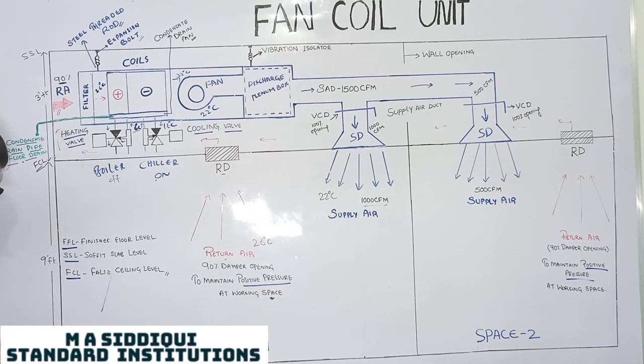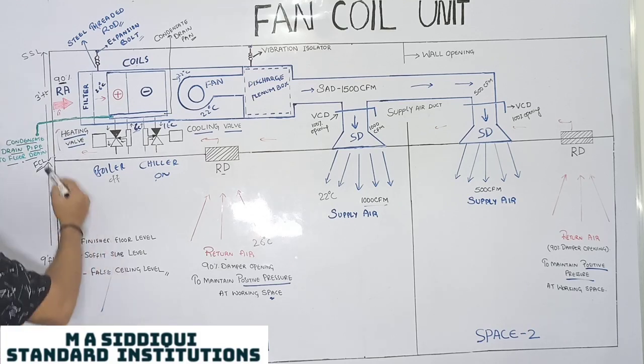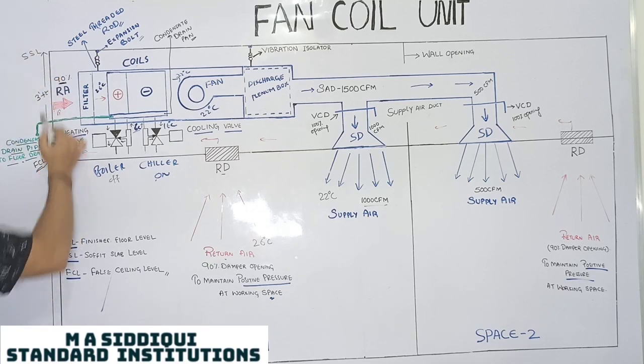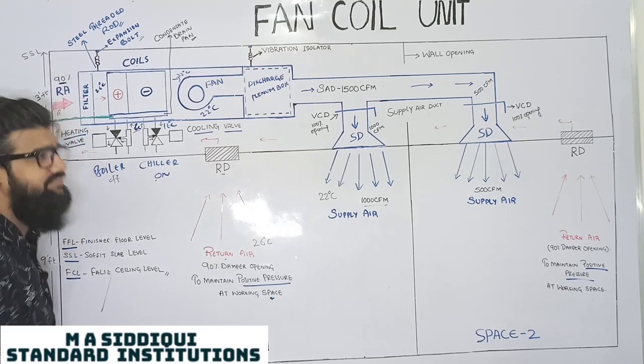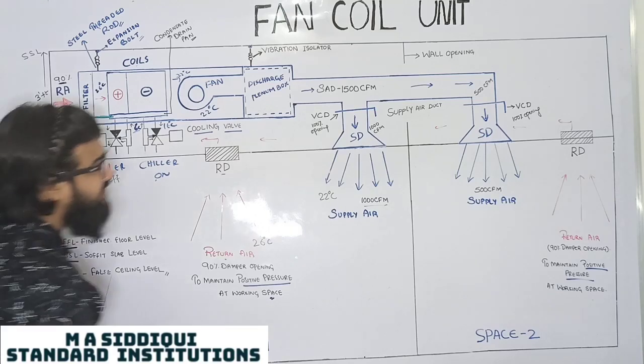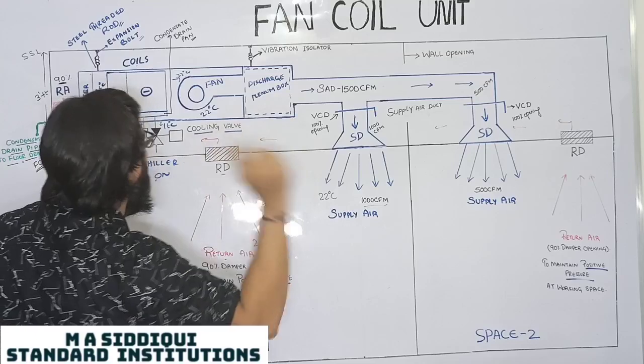One more important thing. FFL, finish to floor level, fall ceiling level. The height, general height from finish to floor level to fall ceiling level is 9 feet. And from fall ceiling level to your soffit of slab level, the height is of 3 feet. This is it about your fan. And one more important thing, let's talk about the installation part of FCU.